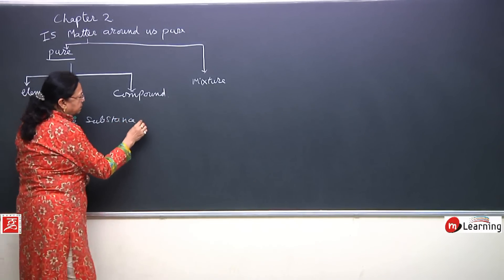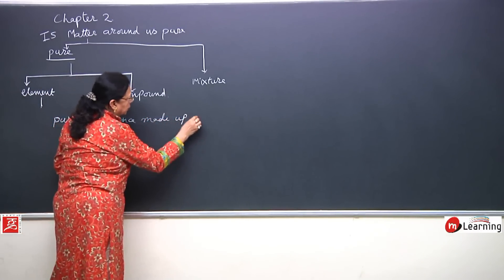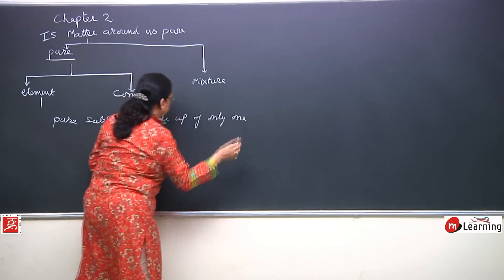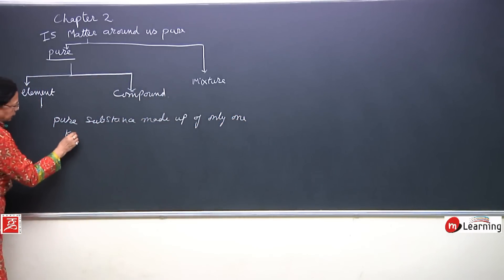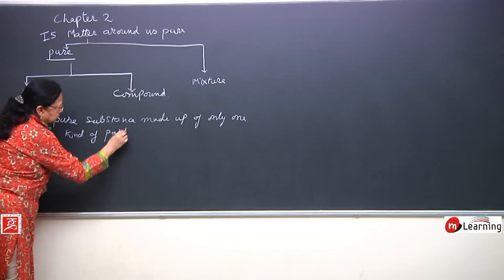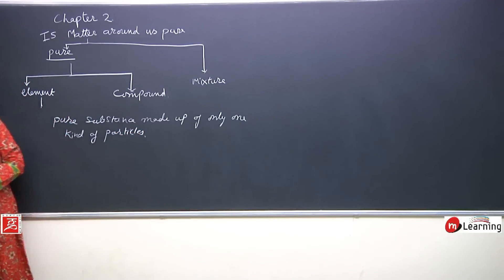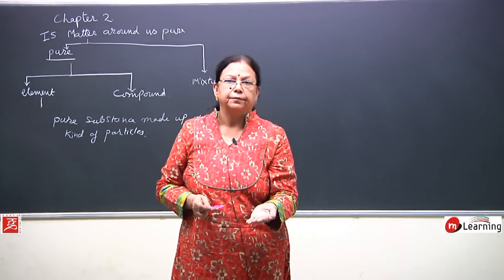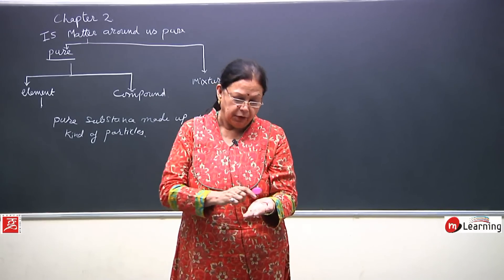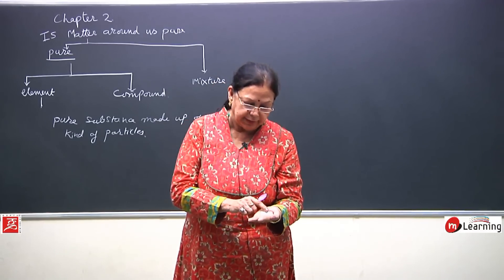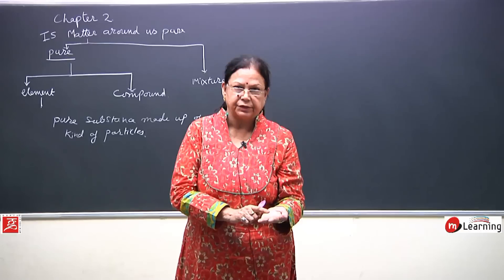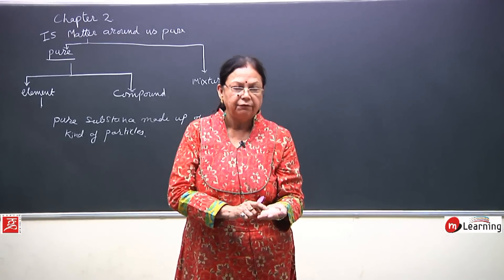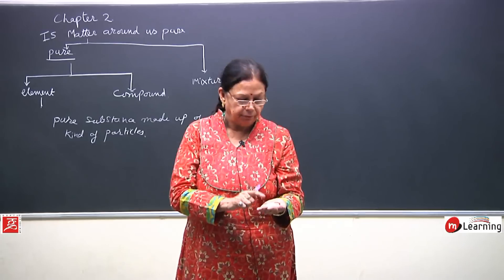A pure substance is made up of only one kind of particles. Take the example of sugar — this is sugar which I am showing you children. It is pure because it is made up of only one kind of matter. All these are crystals of sugar and no other thing is there, so it is pure. It is made up of only one kind of particles.